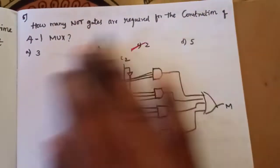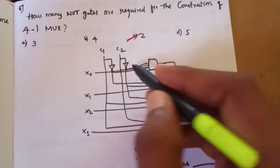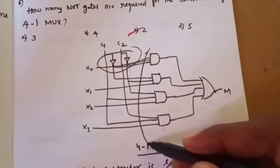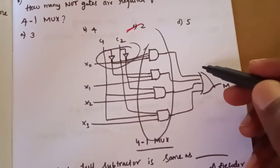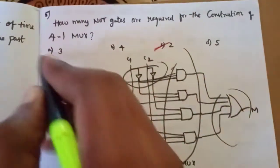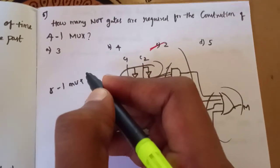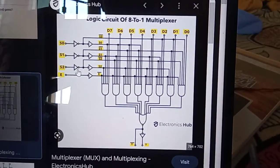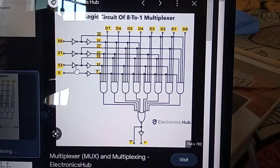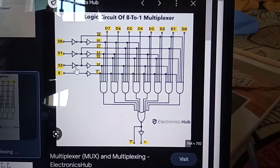How many NOT gates are required for construction of a 4x1 MUX? For a 4x1 MUX, there are 2 select lines, so you need 2 NOT gates. If you have 4 inputs and 2 select lines, then you require 2 NOT gates for the construction.